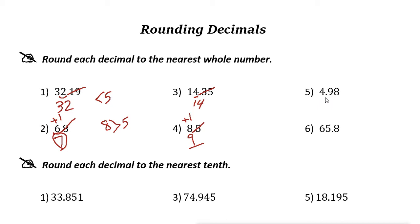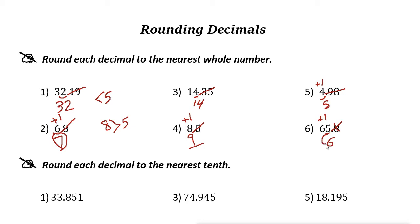Next one: the whole number digit is 4, and the digit on the right is 9 — bigger than 5 — so remove it and add 1 to 4. The answer is 5, so 4.98 rounded to the whole number is 5. Next: 65.8 — the ones digit is 5 and the digit on the right is 8, bigger than 5, so add 1. 5 plus 1 is 6, so the answer is 66.